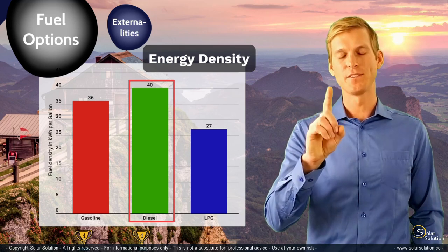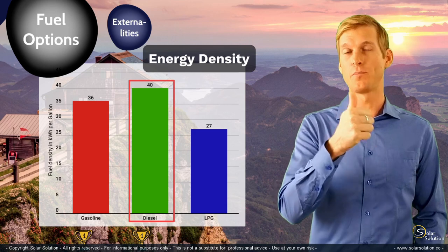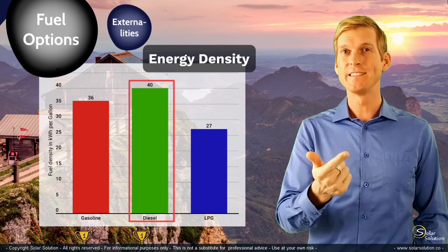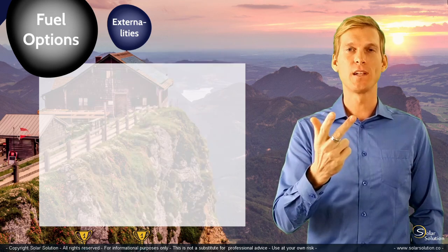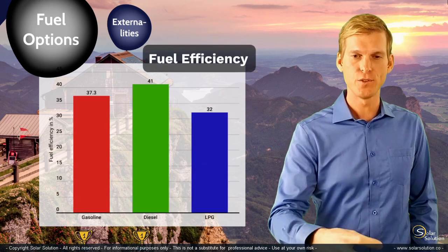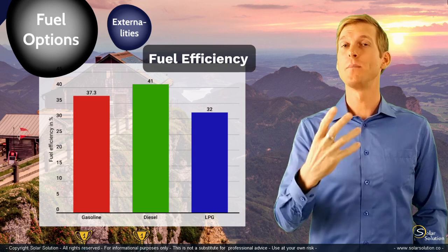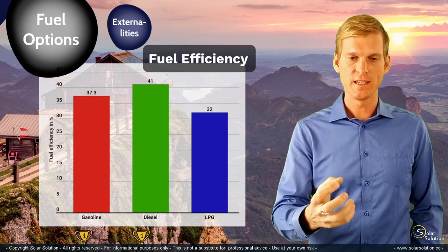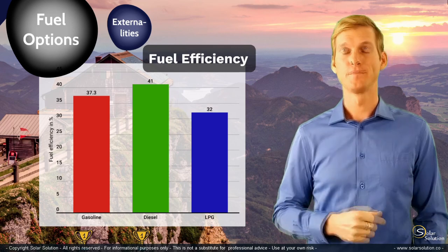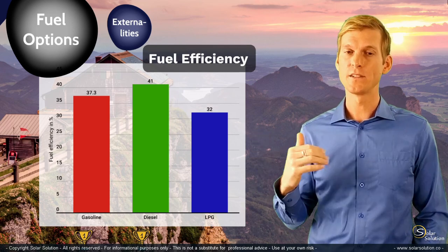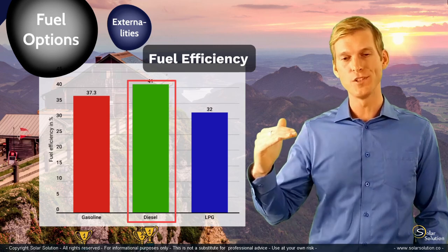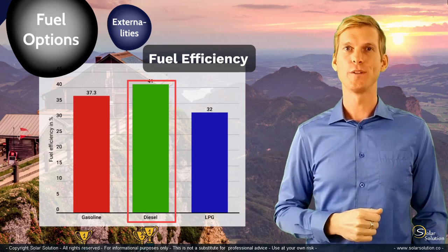Let's draw one more comparison. We compared the price you pay for the fuel and the energy density of the fuel. Now let's look at fuel efficiency — if you take this fuel and burn it in an internal combustion engine, what is the amount of energy that you can recuperate out of it? Diesel is winning again, with the highest fuel efficiency compared to gasoline and LPG. LPG has the lowest.